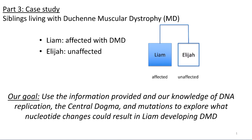Welcome back to our last lecture of the semester and to day two of topic 21. Today we're going to wrap up topic 21 by working through our case study. The case study deals with two siblings: Liam, who is affected with muscular dystrophy, and Elijah, who is unaffected. Our goal is to use DNA replication, the central dogma, and mutations to explore how it's possible that Liam has muscular dystrophy but Elijah does not at the molecular level.